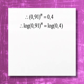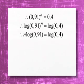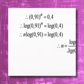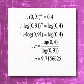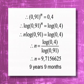We can take logs on both sides and we can take n to the front of the log and divide by log 0.91 on both sides. This will give us this decimal, so surely it will be nine years and nine months. Very interesting example.